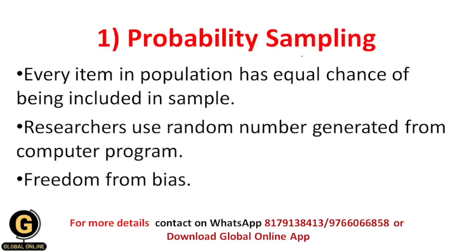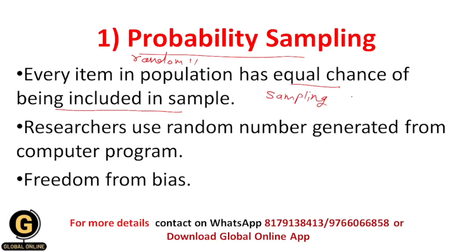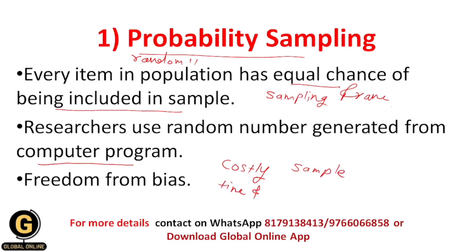In probability sampling, every item in the population has an equal chance of being included in the sample — meaning there is random selection. One way to undertake random sampling is for the researcher to first construct a sampling frame, and then use random numbers generated from a computer program to pick the sample from the sampling frame. It has the greatest freedom from bias, but may represent the most costly sample in terms of time and energy for a given level of sampling error.